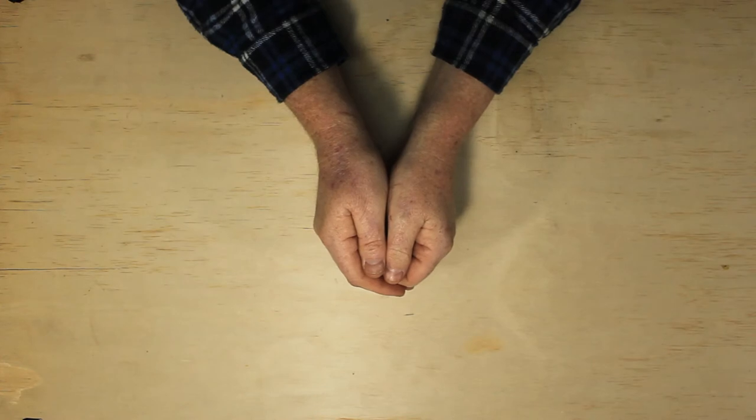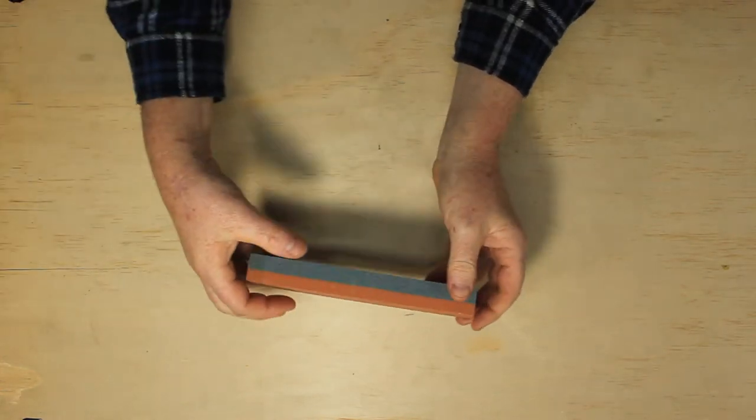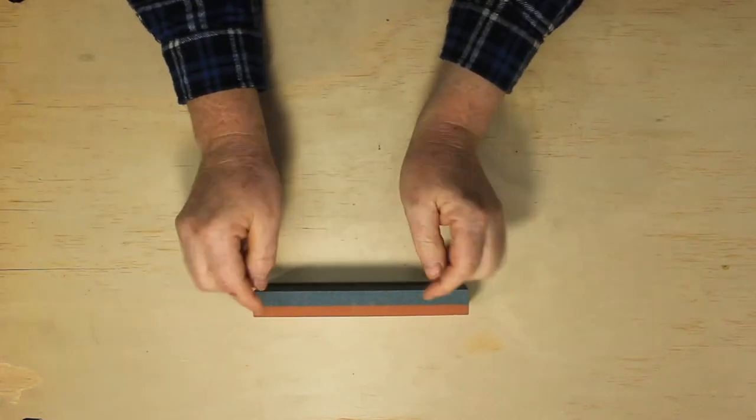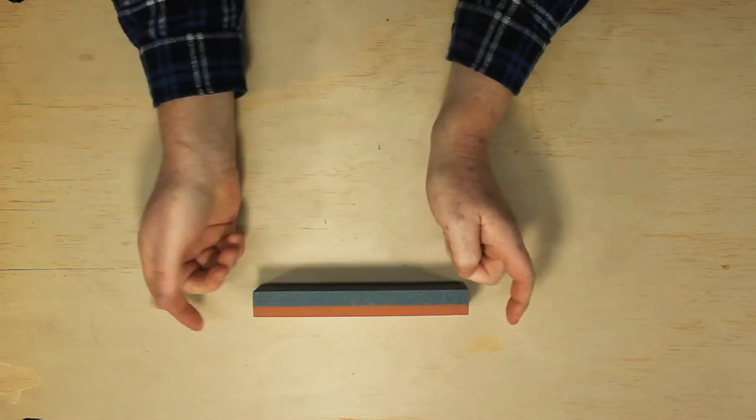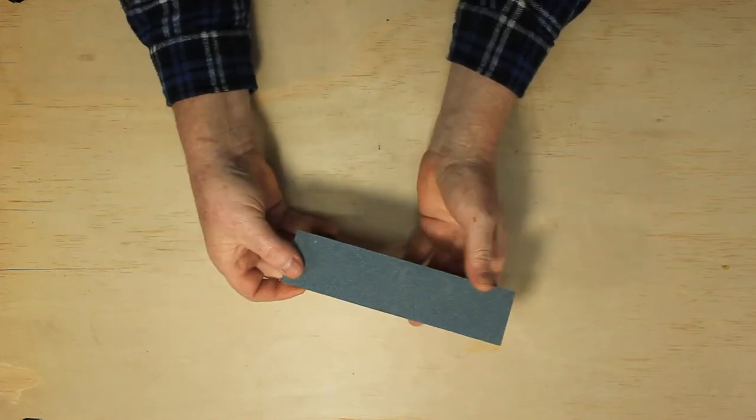Welcome back to Tightwad Workshop. In this video we're going to make a sharpening station to hold our stone and a strop for sharpening chisels and plane blades.